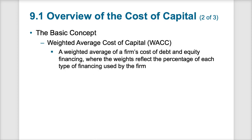The weighted average cost of capital looks at the size of each portion of funding, then calculates the weight of that funding to ultimately get a weighted average of the interest rate across all sources. That way we know what our hurdle rate is — the amount of return we must exceed to make sure the company is profitable. If our weighted average cost of capital is five percent, we wouldn't invest in a project that's going to return less than five percent, because that would ultimately lose the company money.